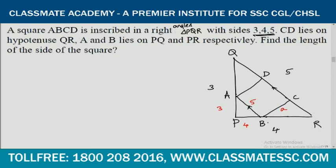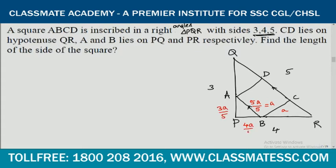Let us assume the side of this square is A. The sides of the smaller triangle are 3K, 4K, 5K. If we assume 5K equals A, then K equals A/5. So the sides become 3A/5, 4A/5, and 5A/5 which equals A.